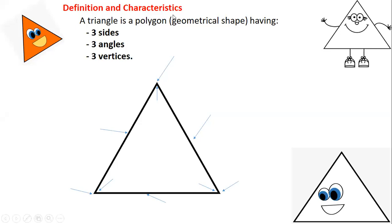First, definition and characteristics. If you look here, you will see this shape. This shape in math, in geometry, we call it a triangle. The word triangle is made of two words: tri and angle. The word tri means three in mathematics.